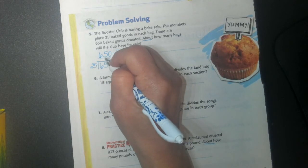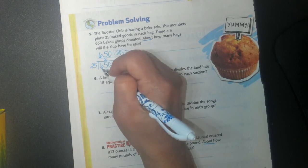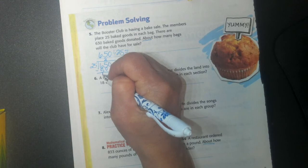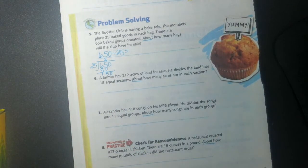So 25 goes into 65 two times. Three times would be 75. That would be too big. So 2 is going to be 50. I will subtract. I'm going to bring down my 1, my 5, and my 50.